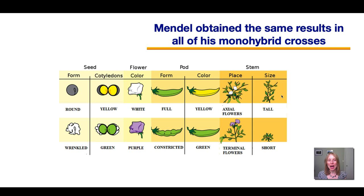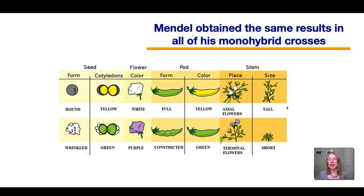He saw this particular pattern for all of the characters he studied. In every case, when he did a cross between two true breeding parents, all of the F1 showed one version of that character — such as all being tall. And then in the F2, the traits that had disappeared came back, and there was always a three to one ratio.